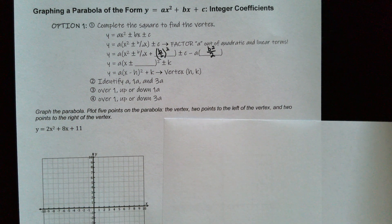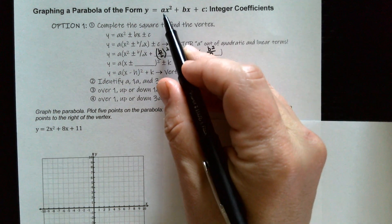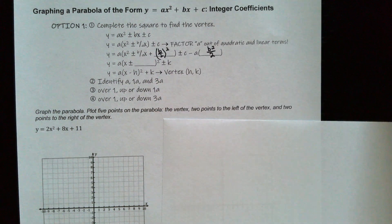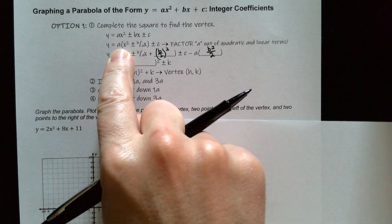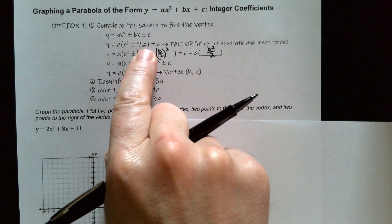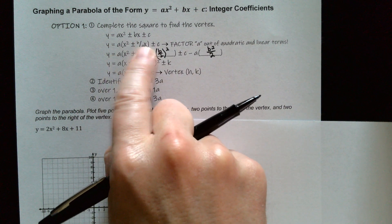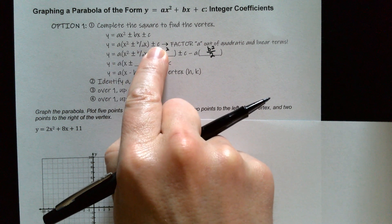In this video, we're going to be graphing a parabola of the form y is equal to ax squared plus bx plus c. We recently did one without the a, and this one's going to be a little different. When you have the a in front, you have to first find what it is and factor it out of the first two terms only, not the third term.